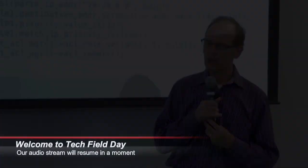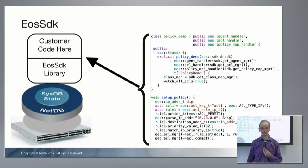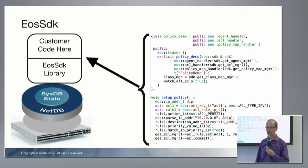The fifth platform is EOS SDK. I've been presenting these platforms in order of sophistication required from the customer. EOS SDK enables our most sophisticated customers to create their own C++ code that runs directly on-box with full access to the system state database, reacting to events like control plane packets, link downs, and route changes.